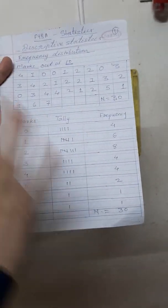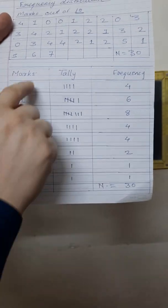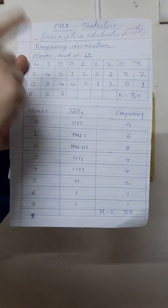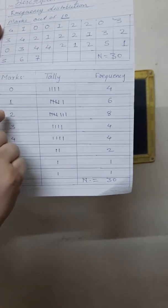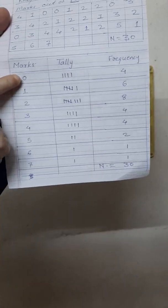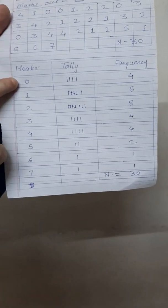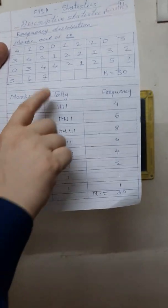Now we have to make a frequency distribution table. For that we have to make 3 columns: one is the marks column, then tally bar, and then frequency. Now from this data we have to observe and fill the table. So: 0 marks, 1 mark, 2 marks, 3 marks, 4 marks, 5 marks, 6 marks, and 7 marks. We have to see the minimum marks and maximum marks from this data — minimum is 0 and maximum is 7. Now we have to make the tally.